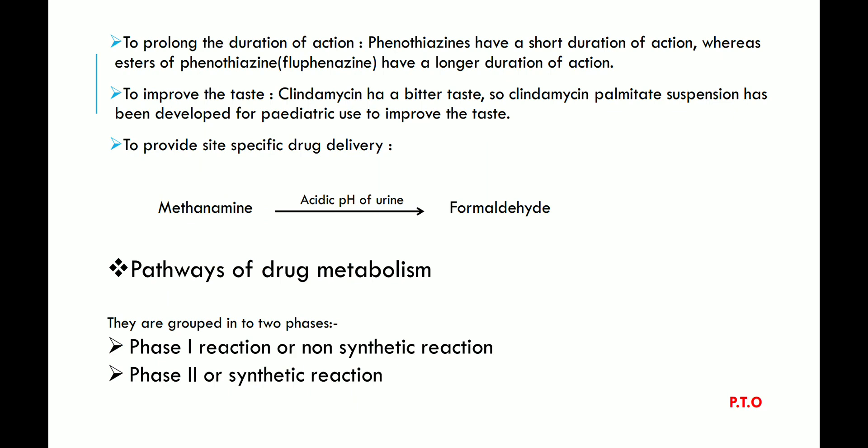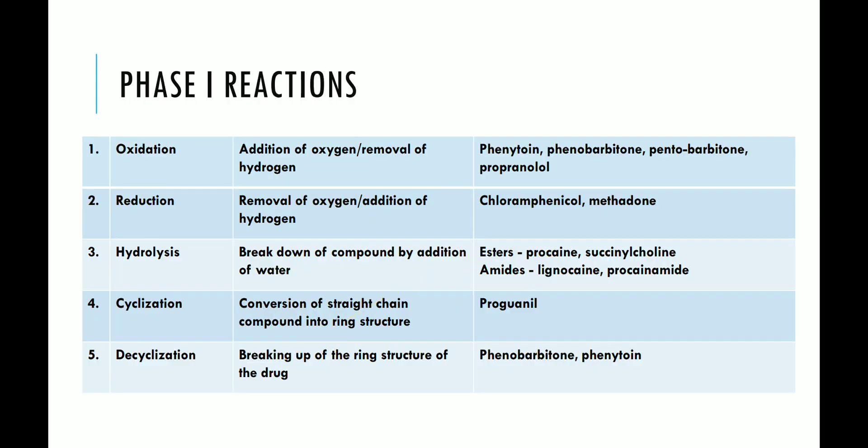Drug metabolism includes two pathways. First is the phase one reaction, also known as a non-synthetic reaction. Phase one reaction is divided into five types. First is oxidation, which means addition of oxygen or removal of hydrogen. Drugs that undergo oxidation include phenytoin, phenobarbitone, and pentobarbitone.